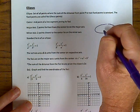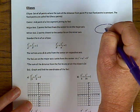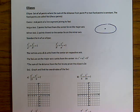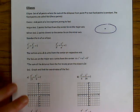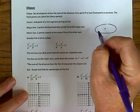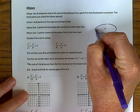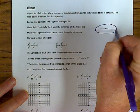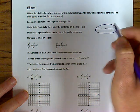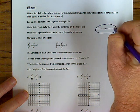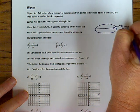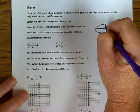You're still going to have a center, just like you have with a circle. And then you're going to have what's called a major axis — the longer axis. So this one would be the major axis.